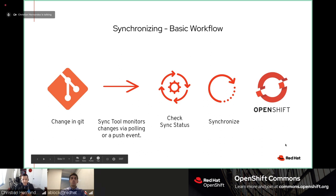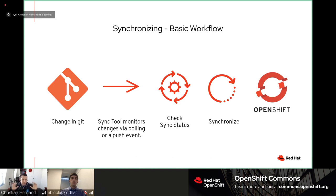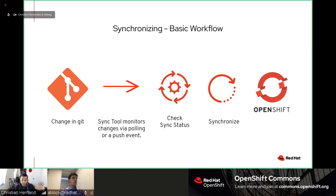The synchronization workflow — this is a basic conceptual overview. From a high-level view: you make a change in Git, either someone merges a pull request or some automation automatically approves and merges it. The sync tool, via polling or push events — or in Argo CD's case through the automatic control loop — will check the status. It sees the declared state says one thing and the current state says another, so it synchronizes and reconciles the two, then applies the changes in-cluster.